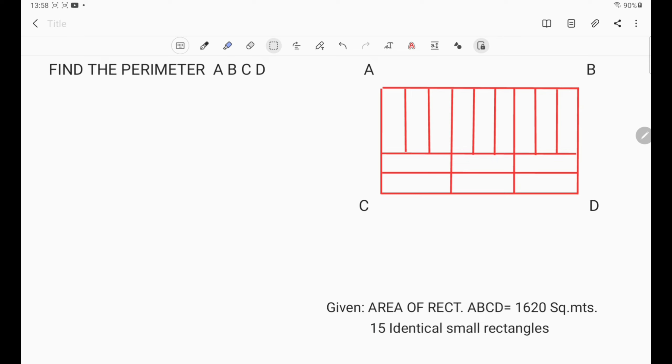Now, we are going to solve the perimeter of rectangle ABCD which is our concern. Let's try to analyze the figure. For solving the perimeter of ABCD, we have to determine the length of AB and AC.